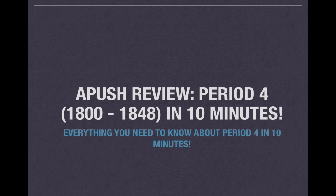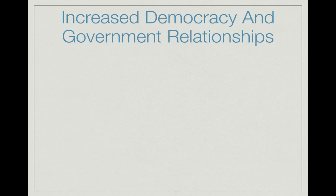Hey, push peeps! We have a push review for Period 4, from 1800 to 1848, in about 10 minutes — maybe 12 or 15, it's a long one. You asked for it, you got it. You know what's going to be on the exam, so let's get going. Let's talk about increased democracy and government relationships.